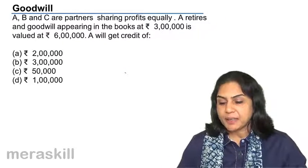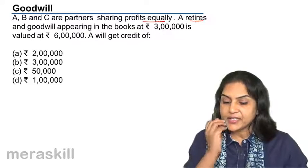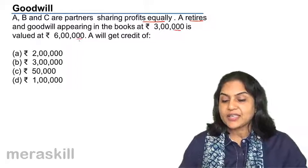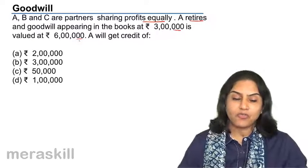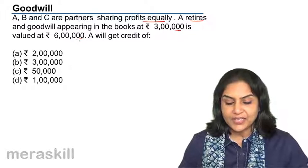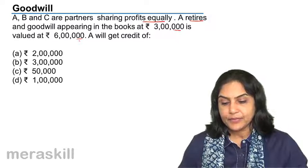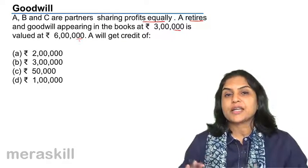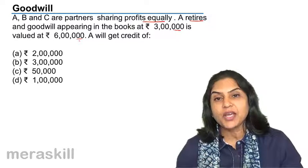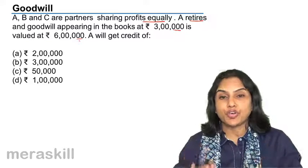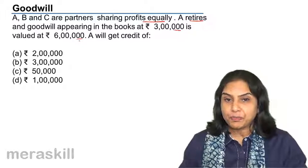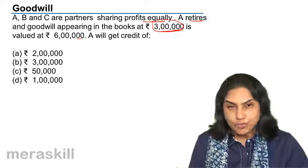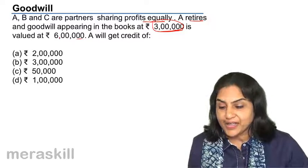Another example. A, B and C are partners sharing profits equally. A retires. Goodwill appearing in the books is 3 lakh, but is actually valued at 6 lakh. Goodwill already appearing in the books — that amount is already reflected in the capital accounts of the partners, as is the value of all assets and liabilities existing in the balance sheet. So we don't need to pass any adjustment entry with respect to this 3 lakh. However, it is valued at 6 lakh, which means there is an amount of 3 lakh which is not reflected in the balance sheet.